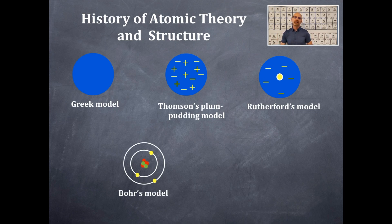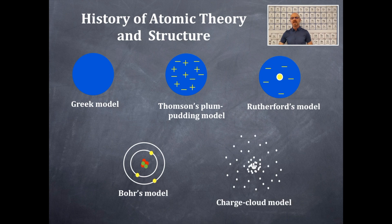Eventually we move forward and we have the first mathematical model of the atom, and that's Niels Bohr's model. That's where the electrons are actually in orbits around the nucleus — a central nucleus with positive charge and zero charge for the neutrons — and these electrons are orbiting like the planets do around the sun.